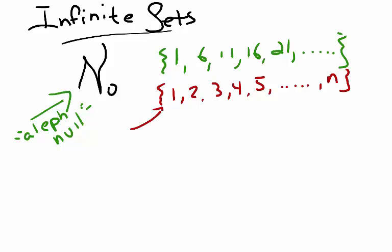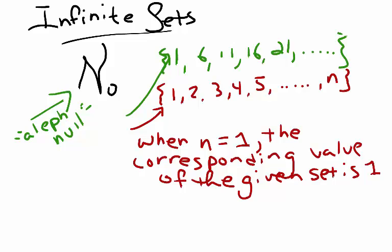Now here, when n equals one, the corresponding number in the problem set is also one. So when n equals one, that corresponding value of our given set is also equal to one.